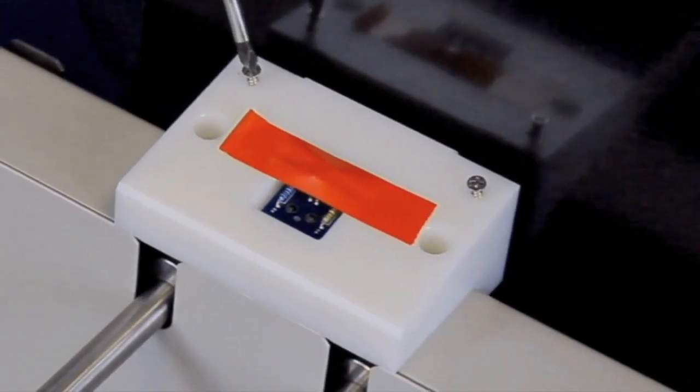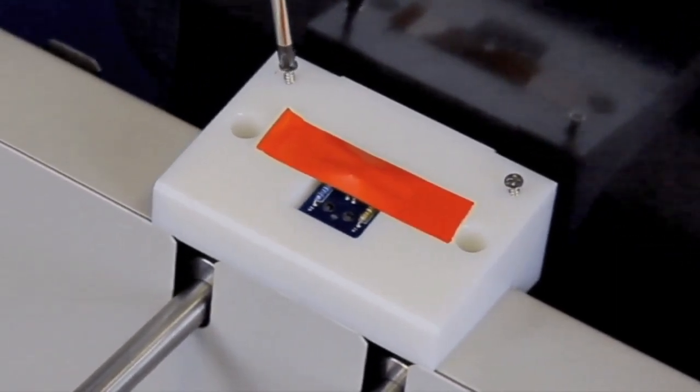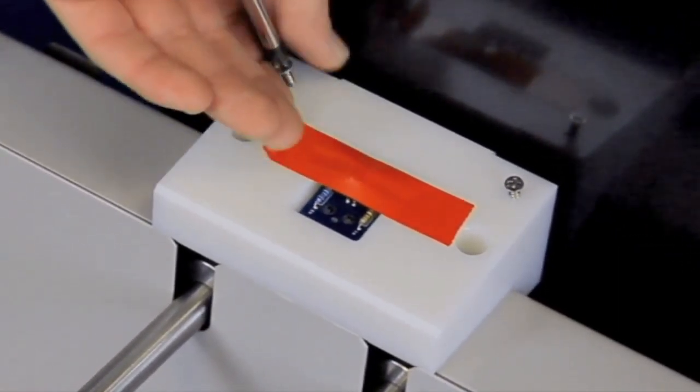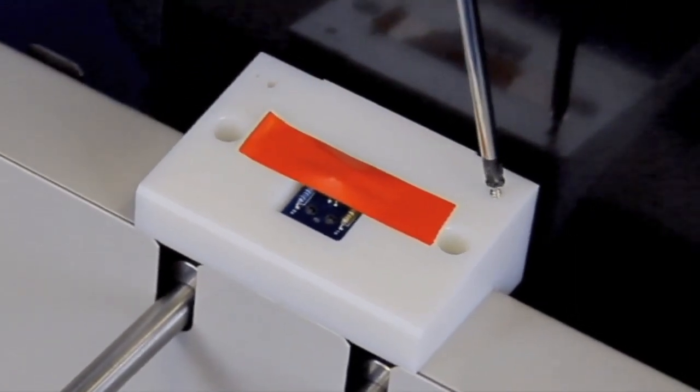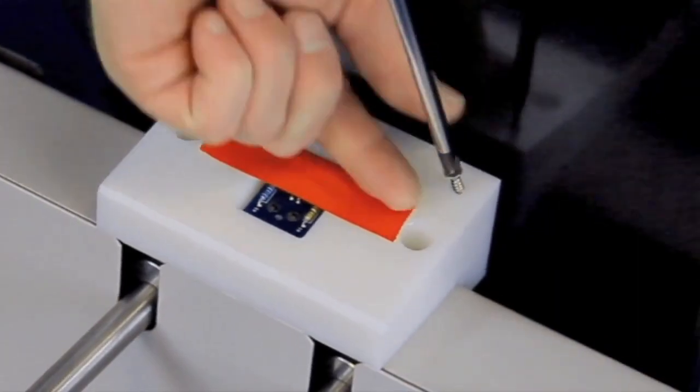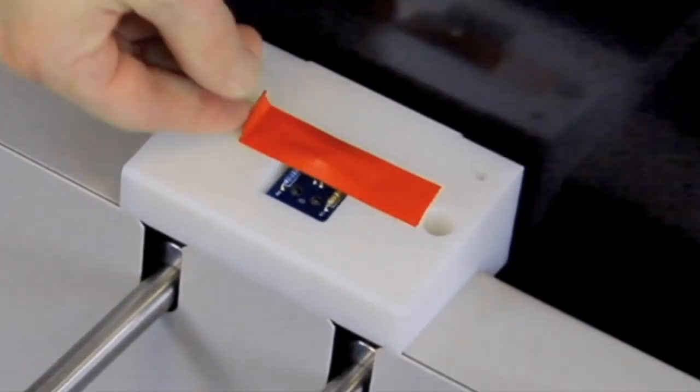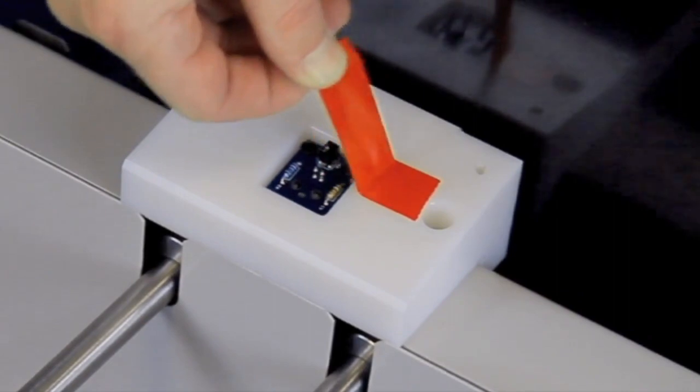Remove two screws from the white sensor block. Remove the red tape from the sensor on the sensor block.